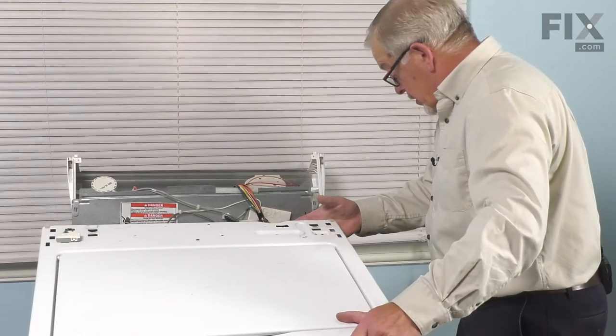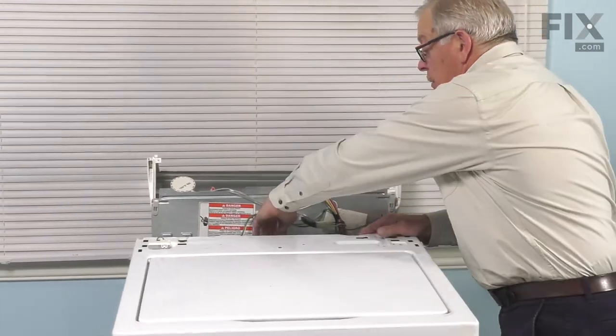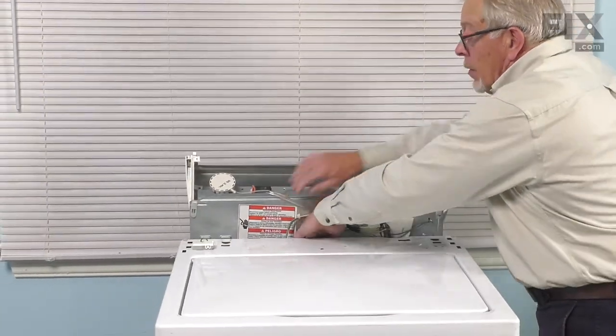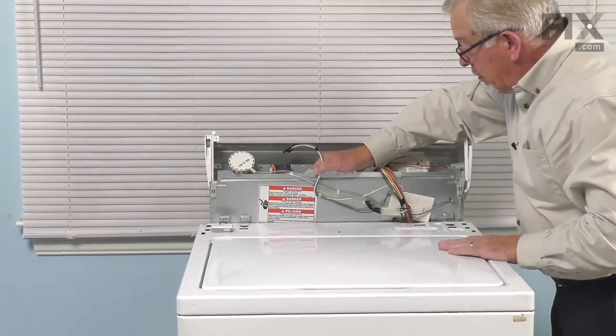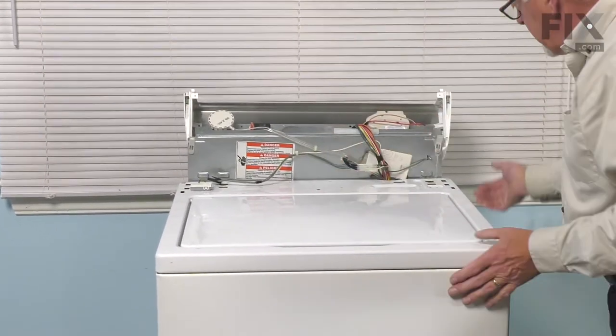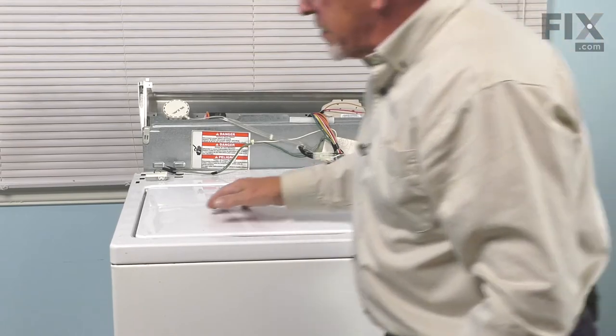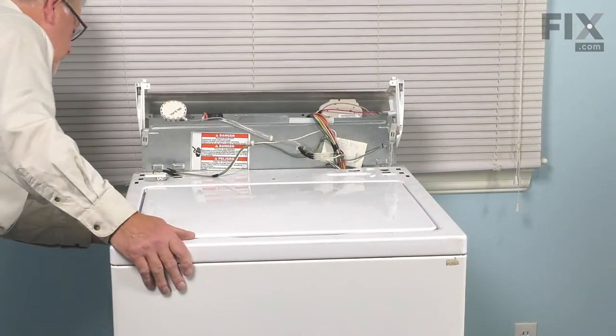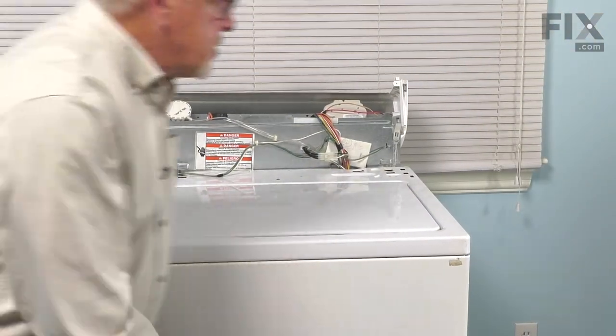Now, we're ready to lower the cabinet back down. Make sure we tuck that water inlet assembly in underneath. Then check both sides and make sure that the back panel fits in between the back edges of that cabinet.